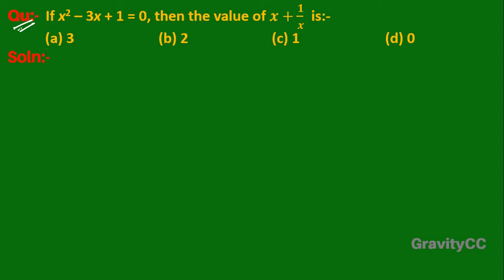Question: if x² - 3x + 1 = 0, then find the value of x + 1/x. Given that x² - 3x + 1 = 0, we can rearrange to get x² + 1 = 3x.